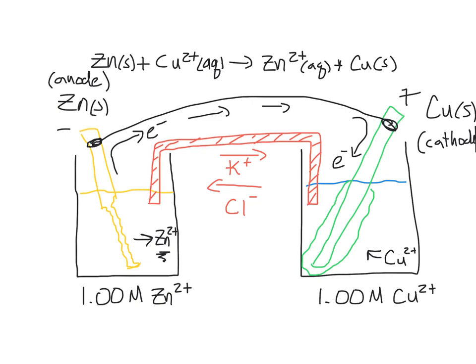We can write out the two half reactions that are occurring in the system just to clarify. So the oxidation reaction is occurring over here, so the zinc, and I'm going to write 0 just to remind us that the oxidation state is 0 for that metal, is getting oxidized to zinc 2+, which is producing two electrons.